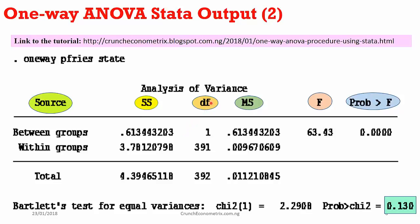The degree of freedom for the between group is 1. I have two categories, so it's an n-1 distribution: 2 minus 1 gives me 1. For the within group, the degree of freedom is 391. I have 410 observations, of which 17 have missing values, giving me 393, and using the n-k distribution for the within group gives me 391 — that is 393 minus 2, where 2 is the number of restrictions in the model. In total I have 392 degrees of freedom.